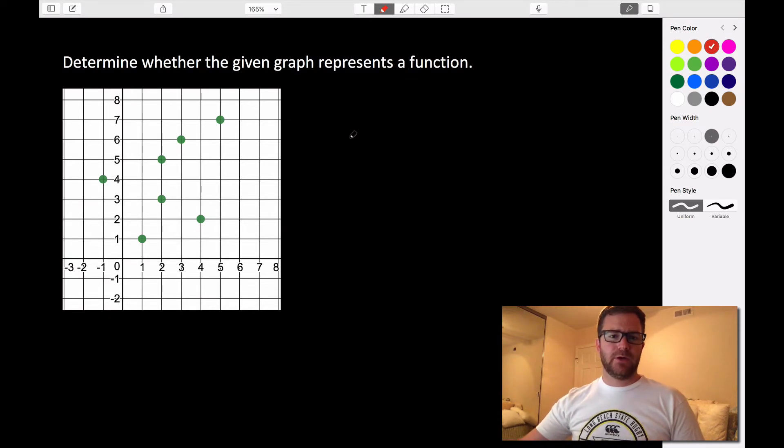Well, if we are given a graph something like this, we can actually use a special test to determine whether or not a graph is a function, and that test is called the vertical line test.